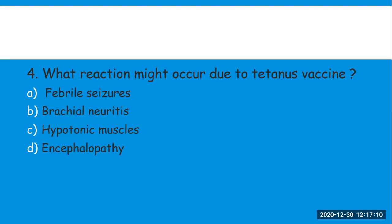Next question: which reaction might occur due to the tetanus vaccine? Options are: A) febrile seizures, B) brachial neuritis, C) hypotonic muscles, D) encephalopathy. The right answer is brachial neuritis, sometimes also known as a shoulder block.